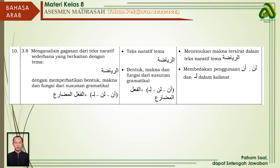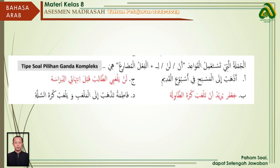Kemudian kisi-kisi selanjutnya: membedakan penggunaan An, Lan, dan Li di dalam jumlah. Contoh soalnya menggunakan tipe soal pilihan ganda kompleks: Al-jumlatul lati tastamilul qawa'idah An, Lan, Li plus al-fi'lul mudhore'.